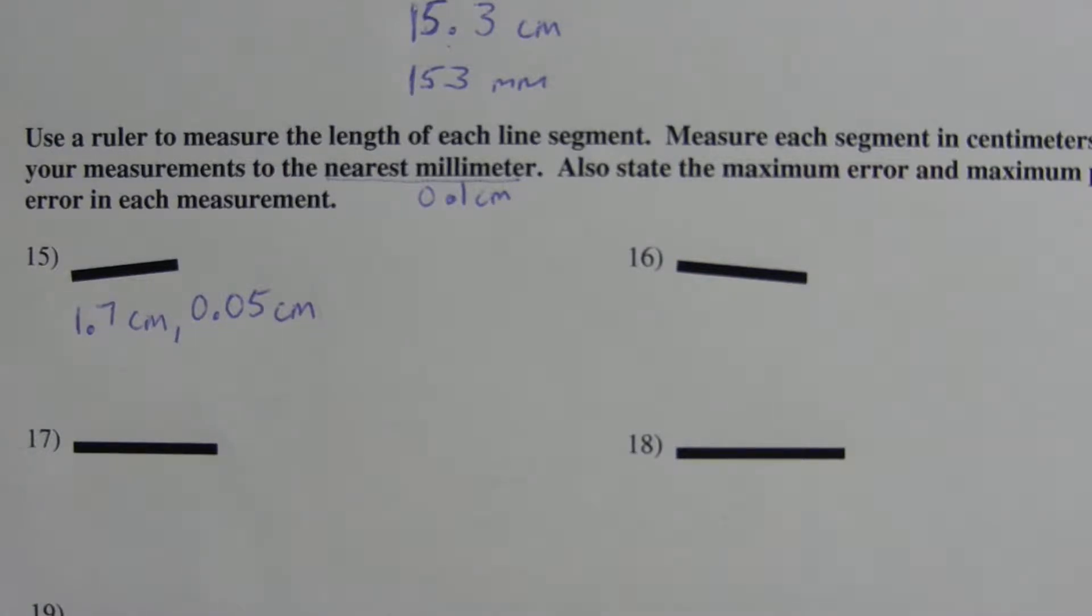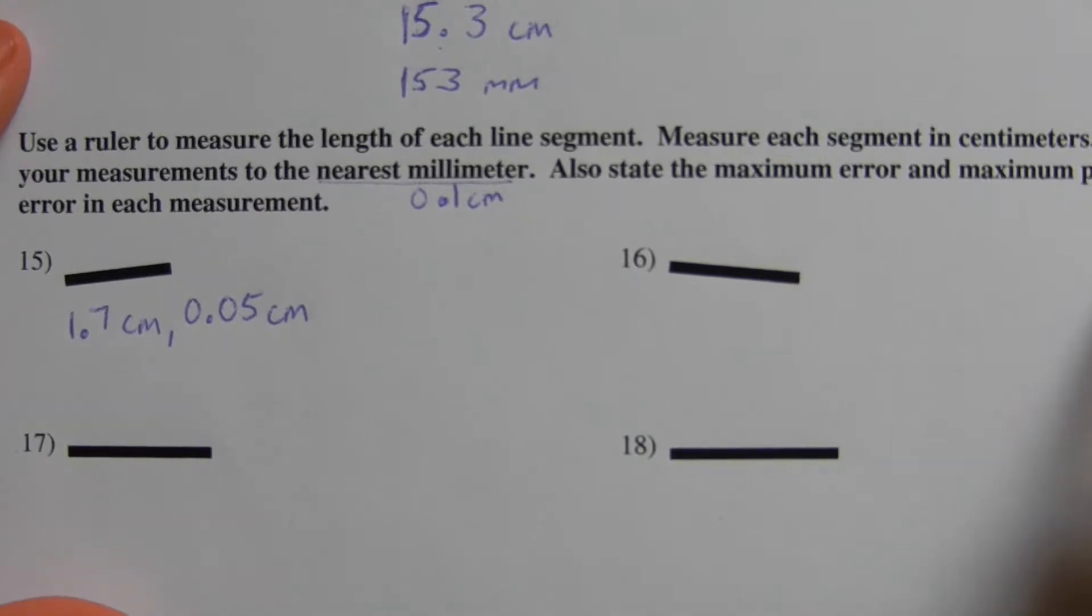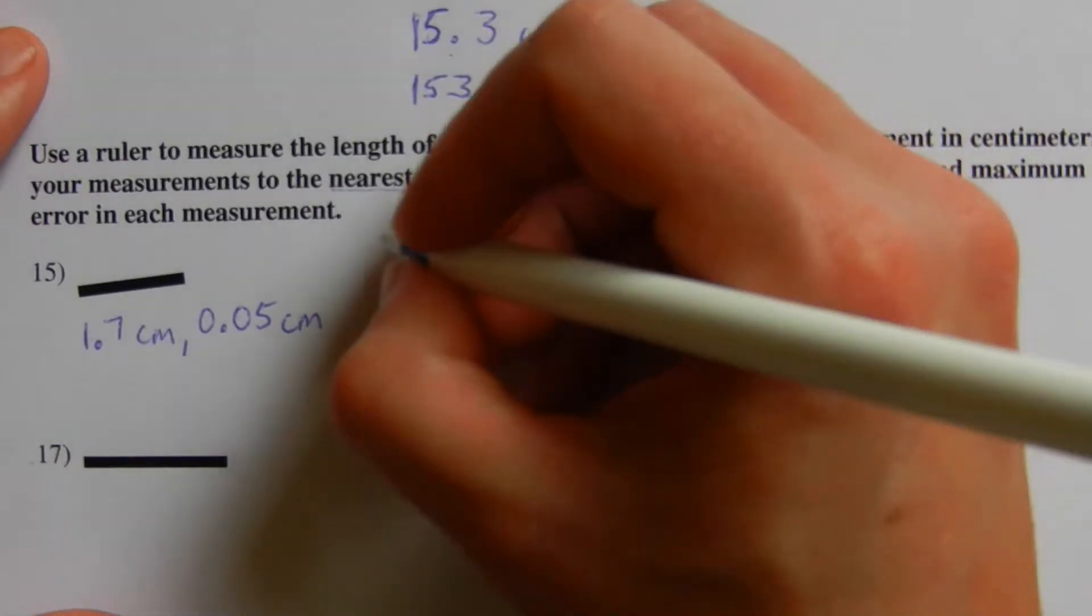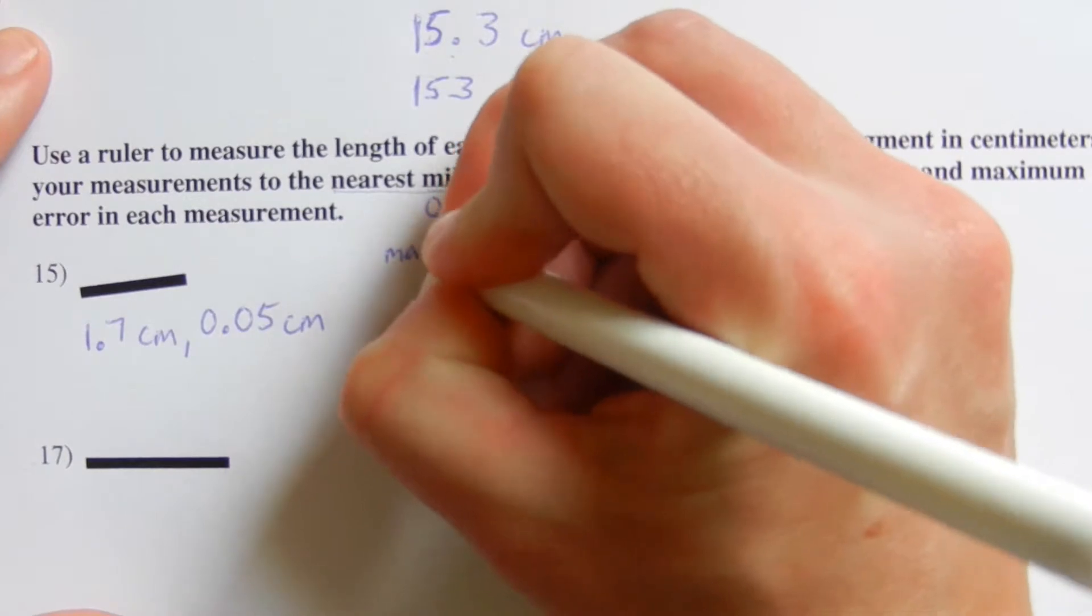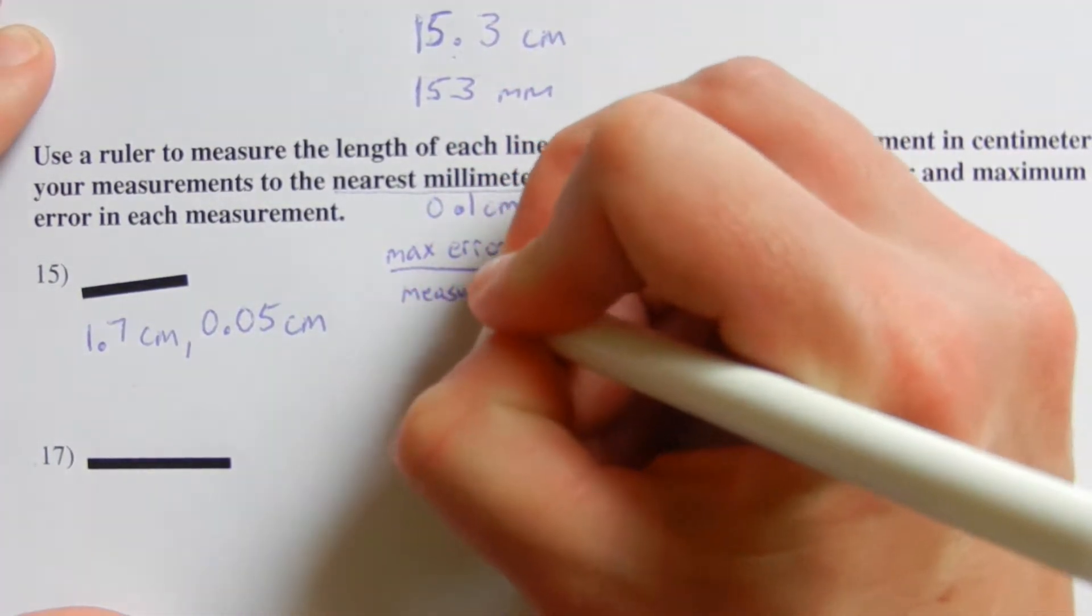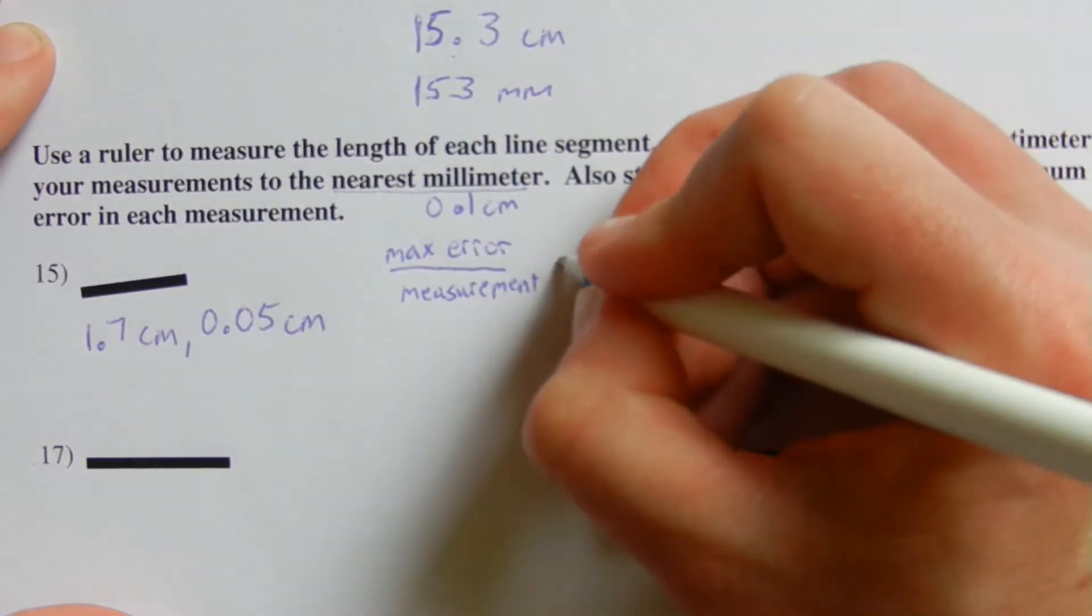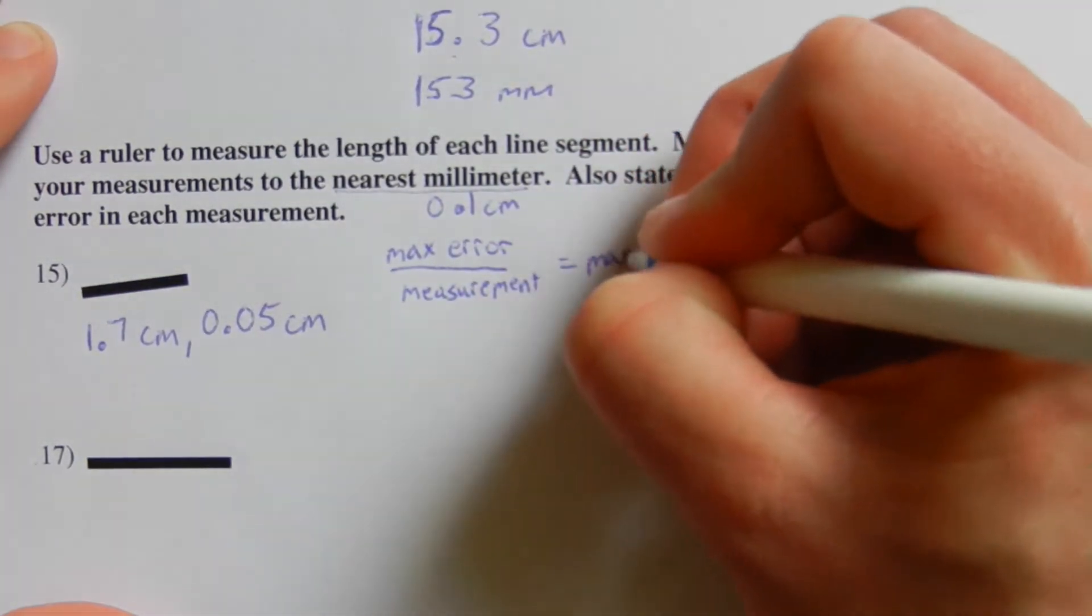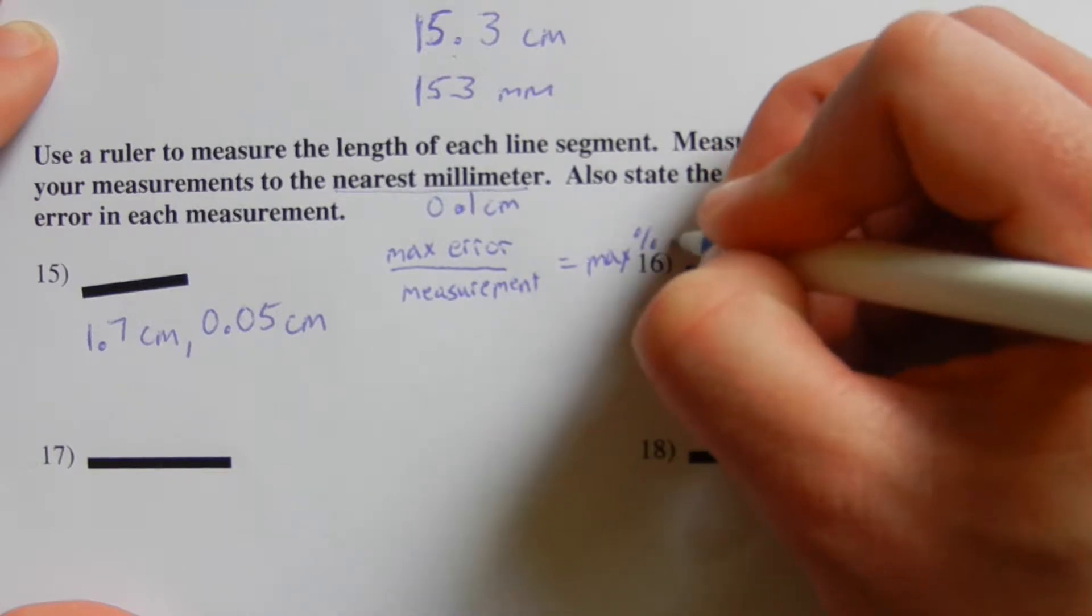And if you remember from the previous worksheet in inches, we did a formula for maximum percent of error. That formula is the max error divided by the measurement that you got, and that's equal to that max percent error.